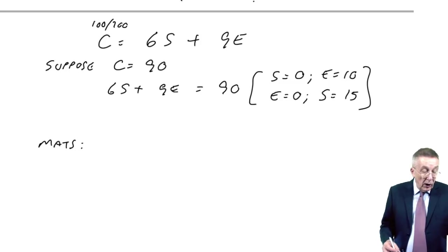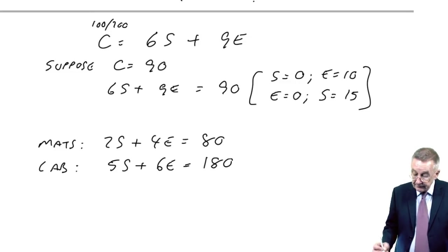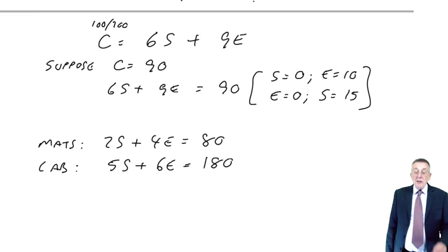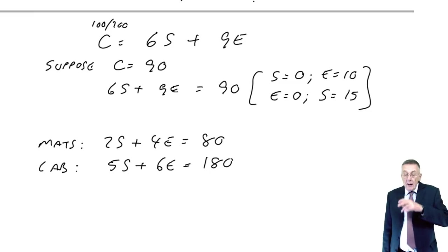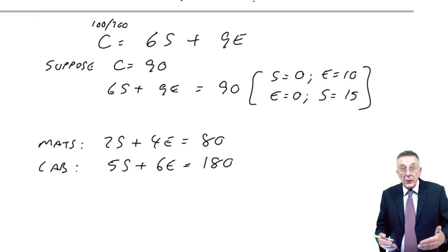Well, the materials equation was 2s plus 4e equals 80. The labour equation 5s plus 6e equals 180. And again, I know it may have been a long time since school, you may have hated it then. But if you have two equations like that, you should be able to calculate what the values of S and E are that satisfy both equations.